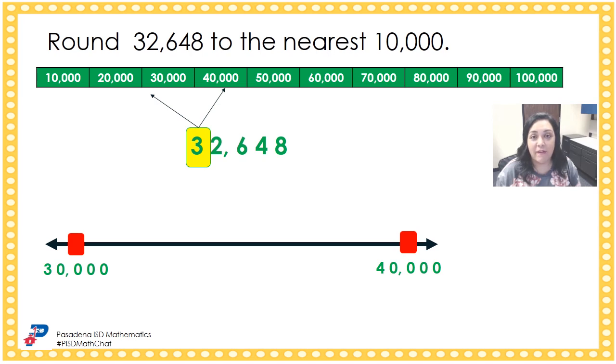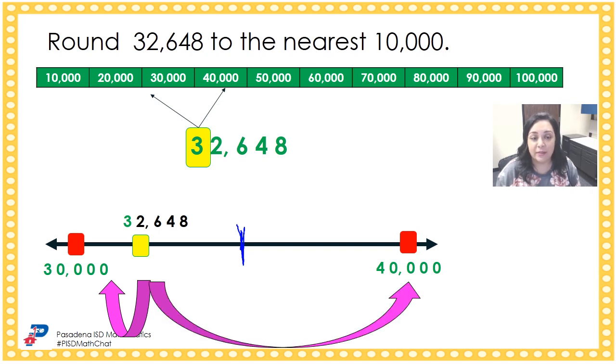I know that 35,000 is the halfway point between both consecutive multiples. So now I have to think about where would 32,648 be? I know that the location of 32,648 is probably around here. And that means that the distance from 30,000 is shorter. It's closer than the distance from 40,000. So 32,648 rounds to 30,000.